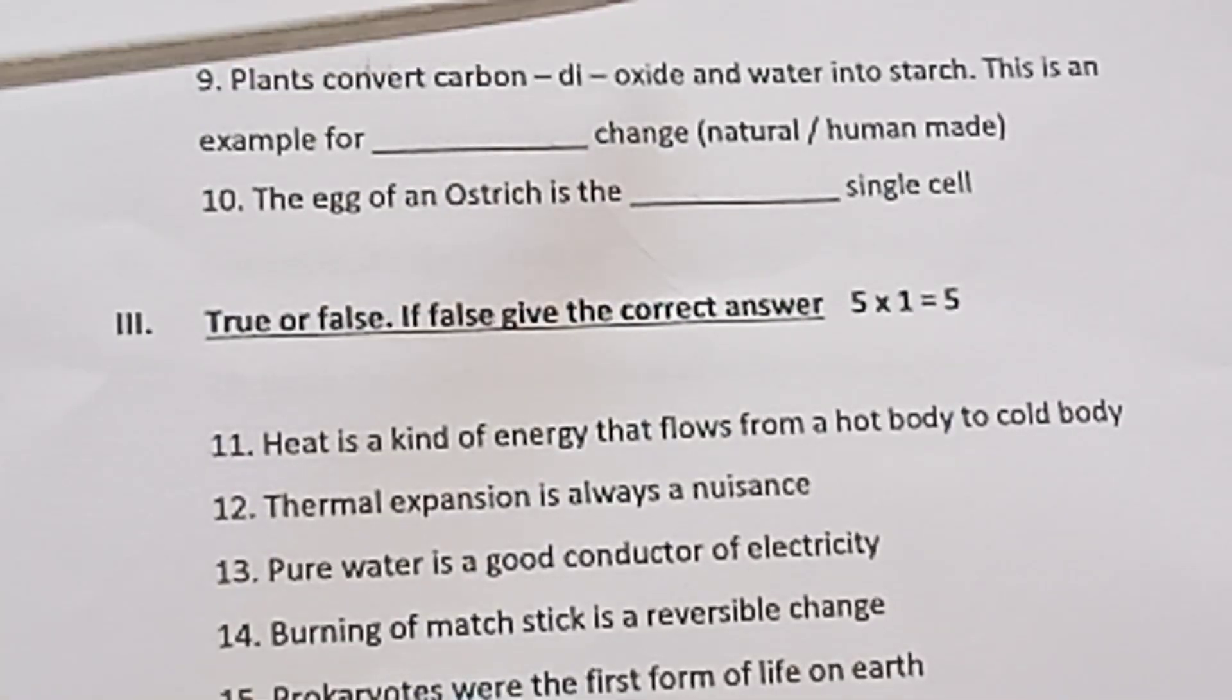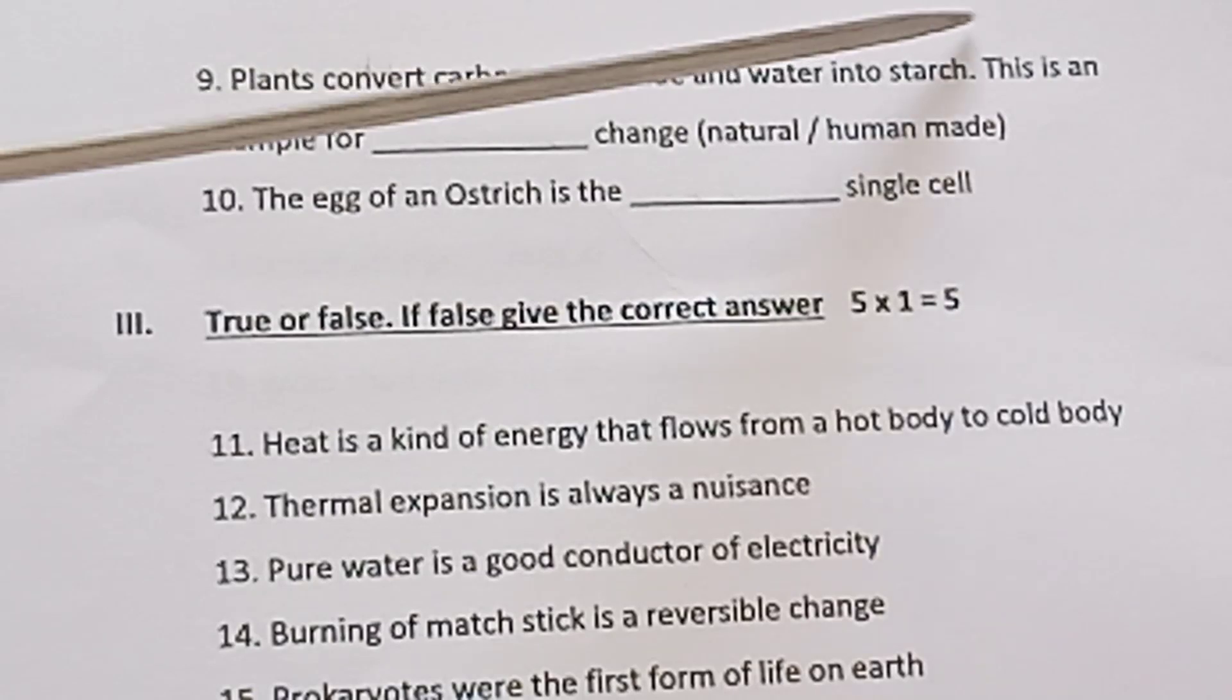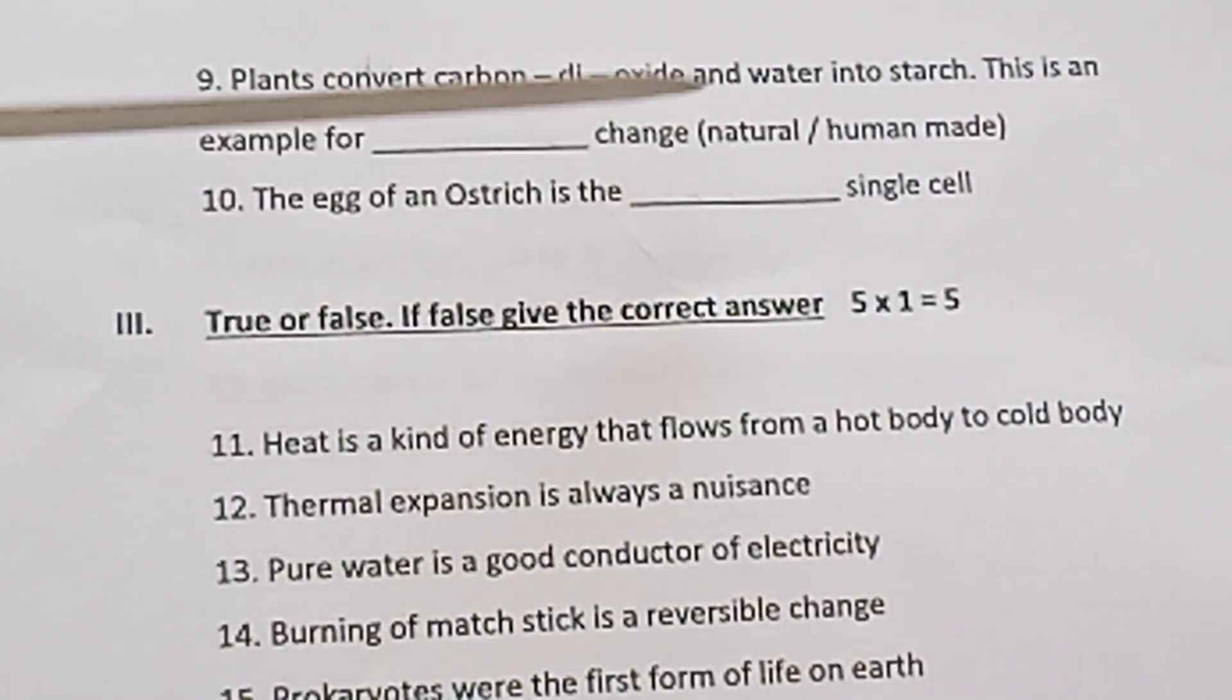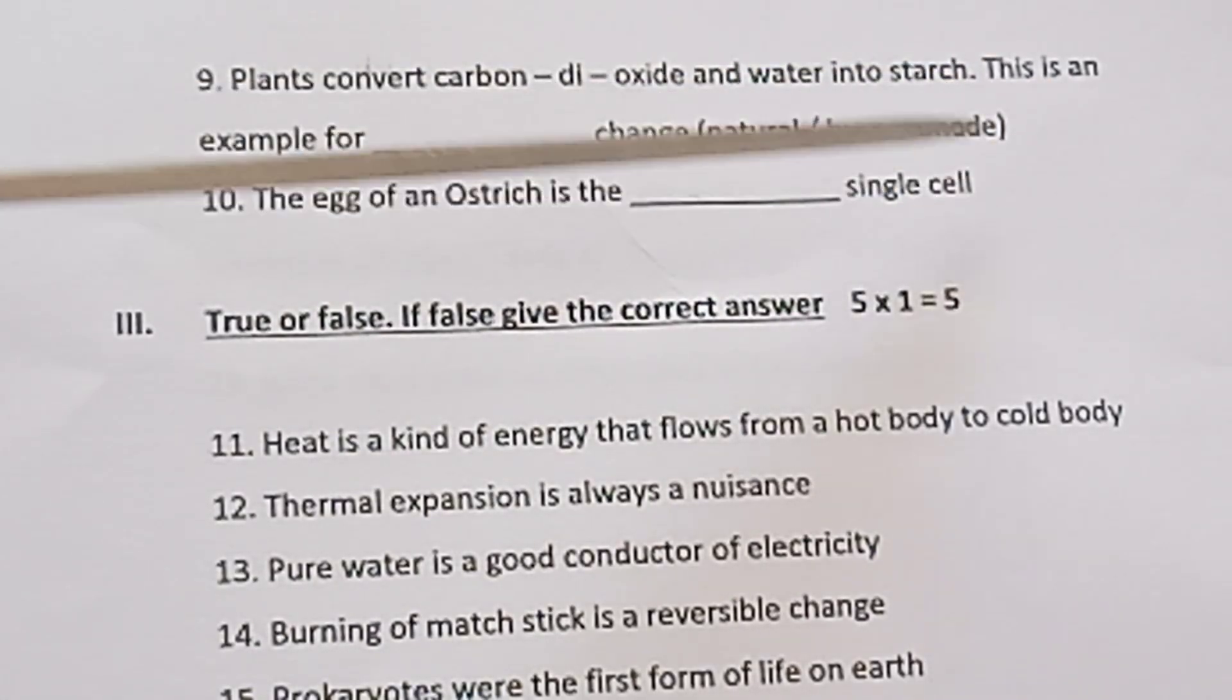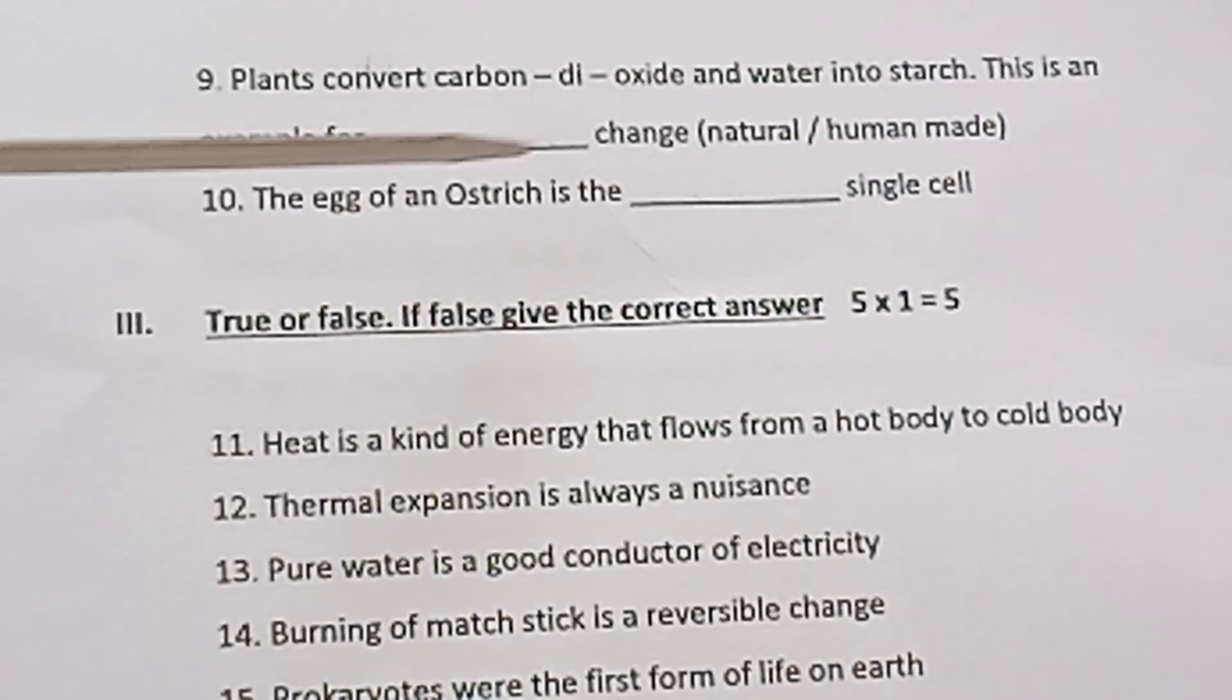Question 9: Plants convert carbon dioxide and water into starch. This is an example of a ___ change: natural or human-made. Question 10: The egg of an ostrich is the ___ single cell.